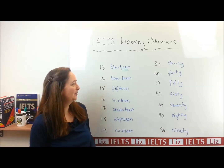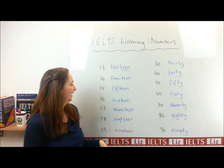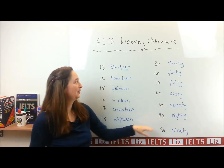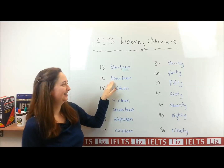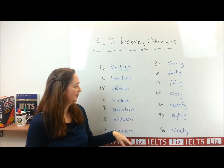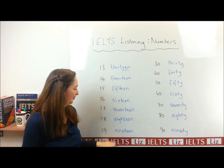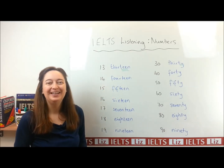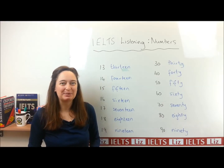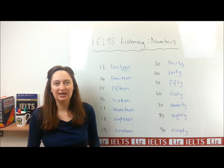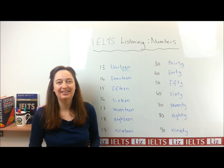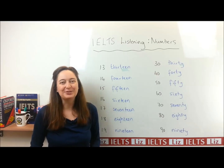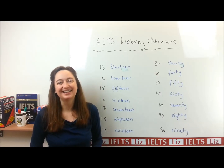Let's check one more time: fifty, seventy, eighty, fourteen, thirty, ninety, nineteen, fourteen. So hopefully you have learnt a little bit about the difference between numbers. Please practice — it is important. You can get that in the test and hopefully you will get that correct. Well, that's all for this lesson. I'll see you again in another IELTS lesson.